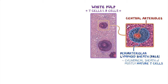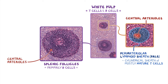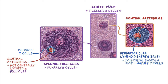At certain points along the central arteriole, the PALS have localized expansion of tissue that form lymphatic nodules of primarily B cells called splenic follicles. The formation of the follicles actually displaces the central arteriole, so as a result central arterioles are not centrally located in splenic follicles. The lymphatic tissue surrounding the central arteriole is still primarily mature T cells, but the rest of the lymphatic nodule consists primarily of B cells.